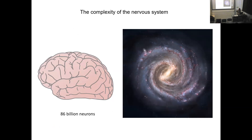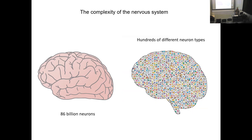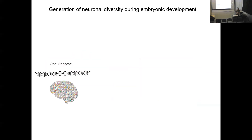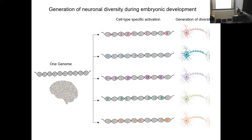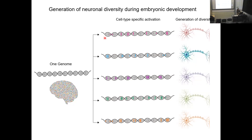Maybe most of you are familiar with the analogy that the human brain contains as many neurons as the stars in the Milky Way. But in fact, more important than the number of neurons is the great diversity of neuron types, because it's this exquisite specialization and function that allows us to fulfill our complex tasks. In our lab we are very interested in understanding how a single genome shared by all cells can be decoded in different ways.